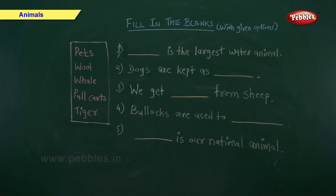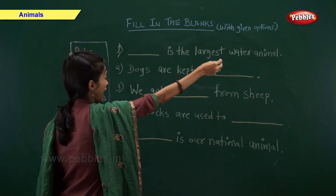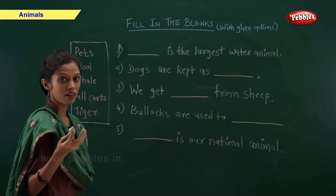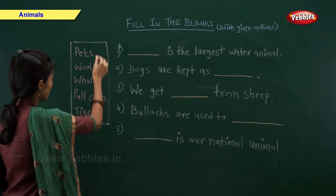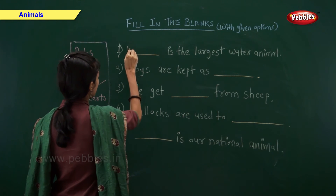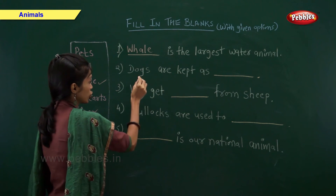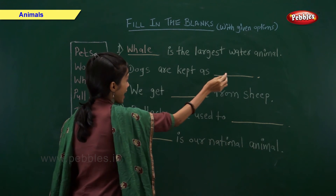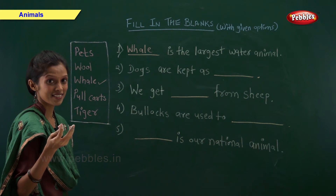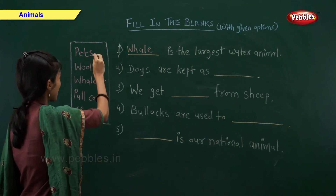Fill in the blanks with given options. Dash is the largest water animal — which is the largest water animal? Come on, tell me. Yes, whale is the largest water animal. Dogs are kept as Dash — remember I told you earlier? Yes, they are kept as pets.